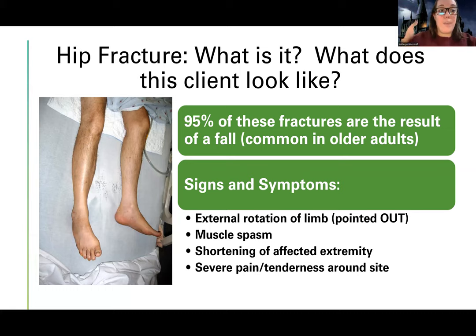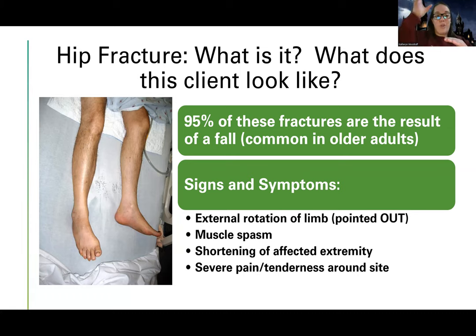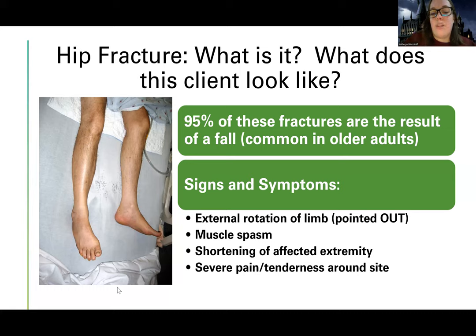With a hip fracture — because it is a ball and socket joint — patients are usually going to have external rotation of their limb, so the foot is pointed outward. They may also have pretty severe muscle spasms, which have a higher incidence with hip fractures. There's also shortening of the extremity: when the ball pops out of the socket, it usually goes above the joint, making that leg shorter than the other. And they'll have severe pain and tenderness. The big distinguishing signs are external rotation and limb shortening.